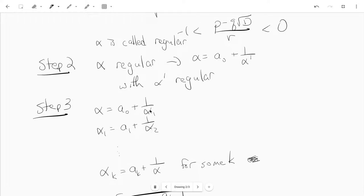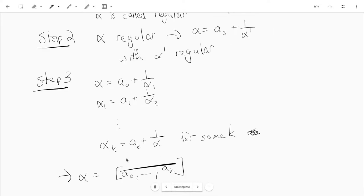and now because there's only finitely many possibilities for these alpha one, alpha two, and so on, eventually you must repeat, and you can actually show that at some point alpha k, you get a k plus one over alpha